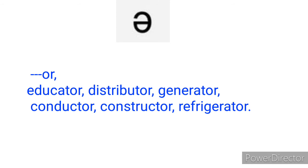Now let's see words that end in 'o-r'. We have educator, distributor, generator, conductor, constructor, refrigerator. Note that the correct pronunciation is not 'refrigerator' but 'refrigerator', not 'generator' but 'generator', not 'distributor' but 'distributor'. So the 'or' at the end of these words is pronounced as the schwa sound 'er'.